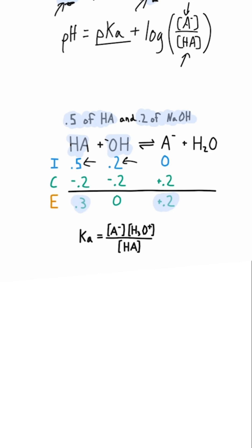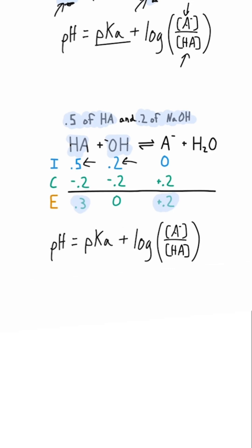If you set up an ICE table for this and you notice you get to this point, instead of doing the equation for Ka, write out the Henderson-Hasselbalch and then plug these values in to the appropriate spots.